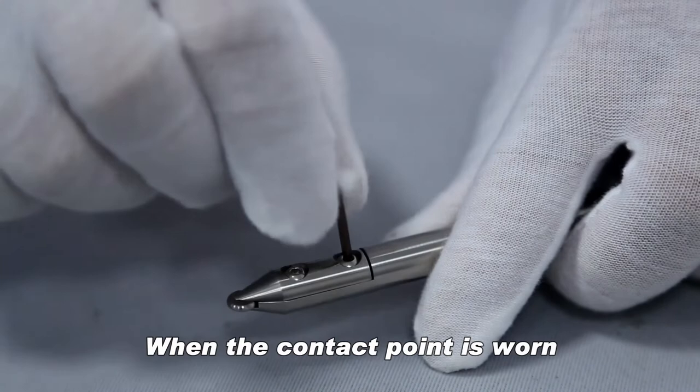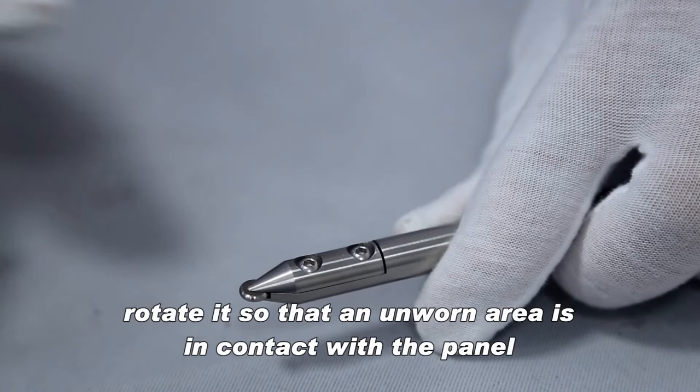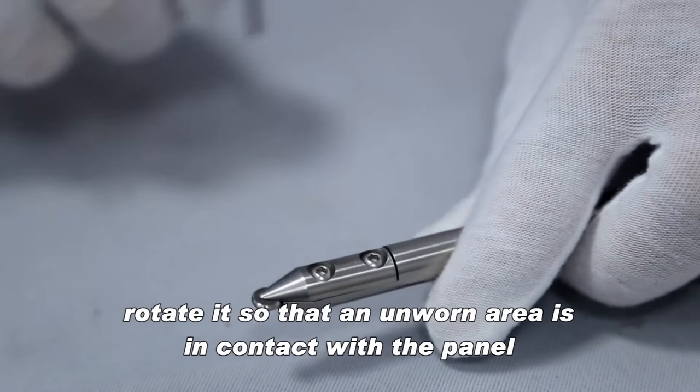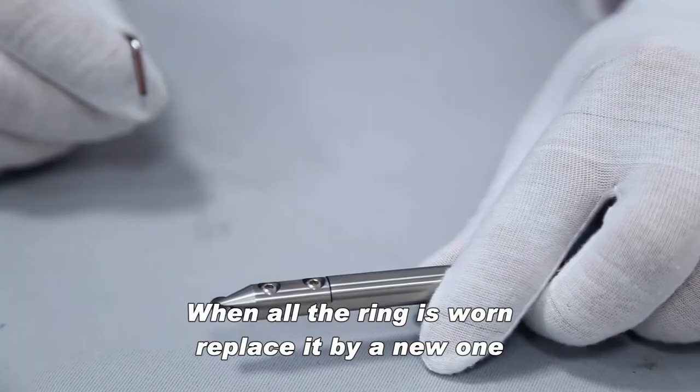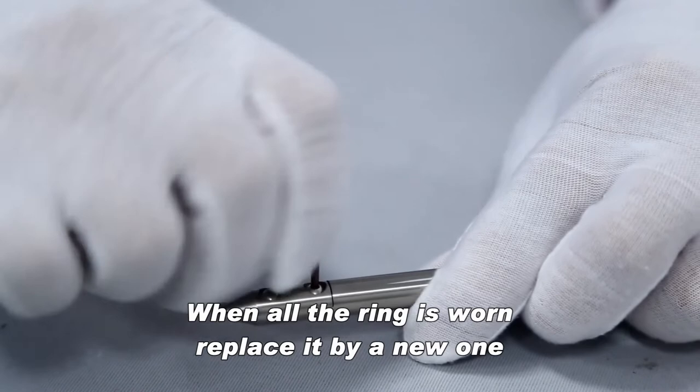When the contact point is worn, loosen the stylus compression screw with the supplied wrench. Rotate it so that an unworn area is in contact with the panel. When all the ring is worn, replace it by a new one.